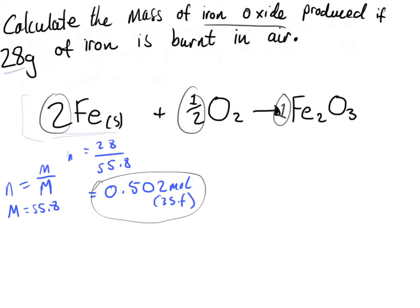So we're looking at the ratio between iron oxide and iron. The equation says that for every 2 moles of iron we get 1 mole of iron oxide, so for every 1 mole of iron we get half a mole of iron oxide. Therefore, to get the moles of Fe₂O₃ we divide the moles of iron by 2: 0.502 divided by 2.